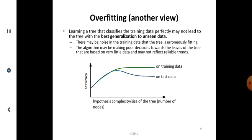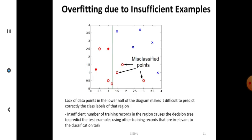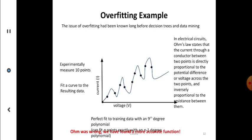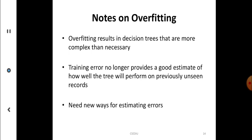Learning a tree that classifies the training data perfectly may not lead to the best generalization on unseen data, because the training data may be too biased. Overfitting due to noise is also a critical issue, as is overfitting due to insufficient examples where we do not cover the entire case space. Overfitting results in decision trees that are more complex than necessary, and training error no longer provides a good estimate of how well the tree will perform on unseen data.